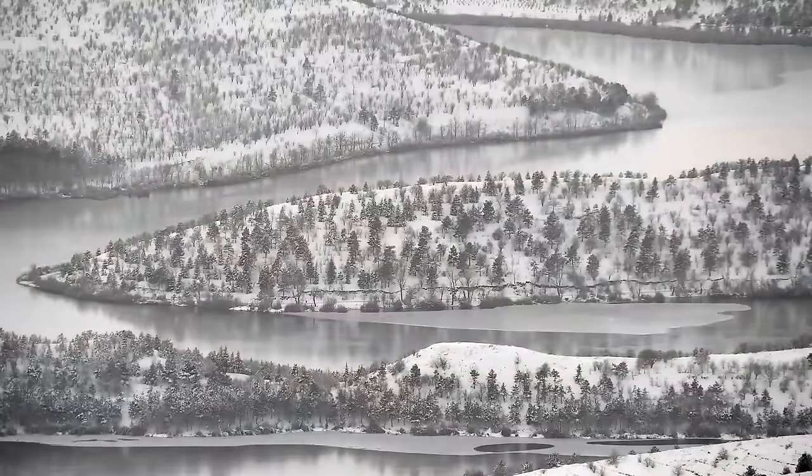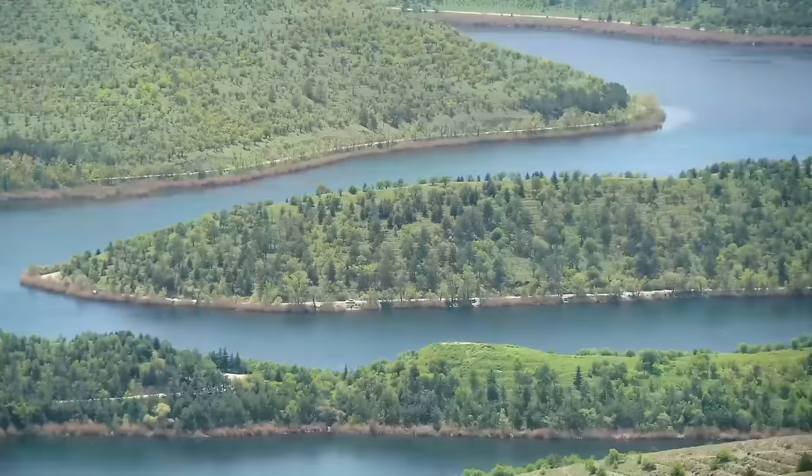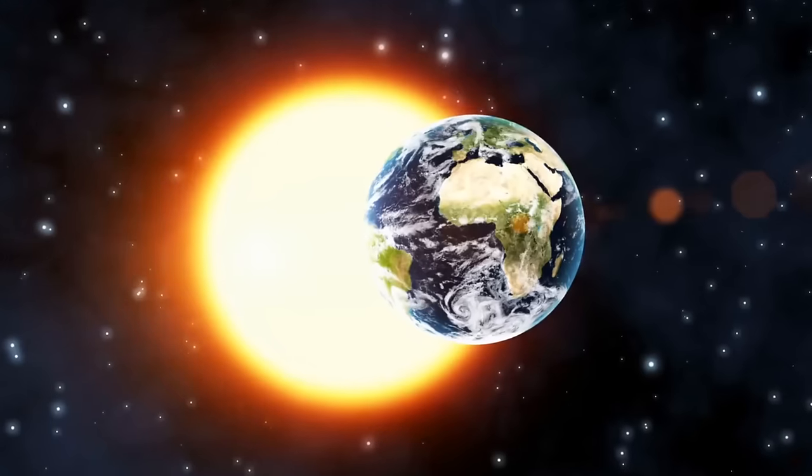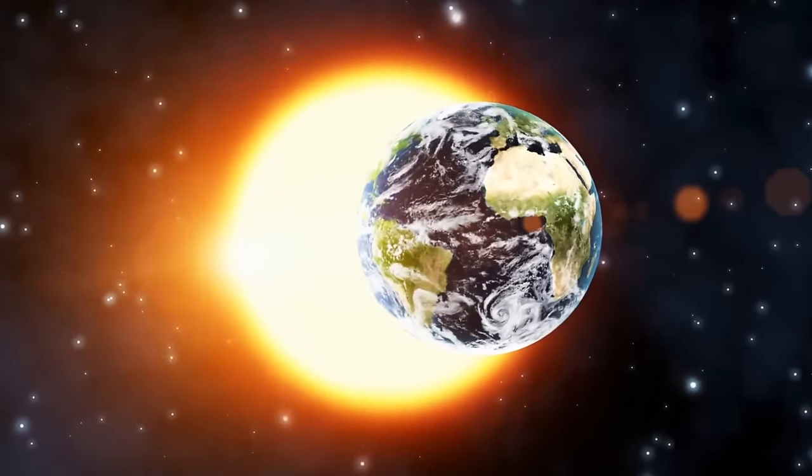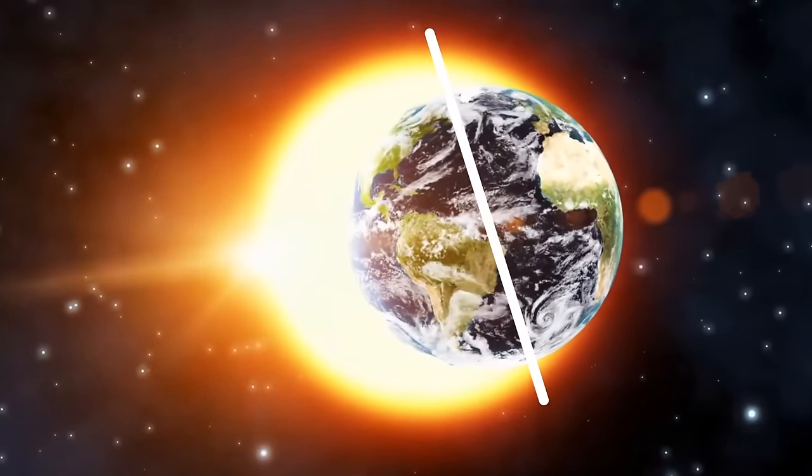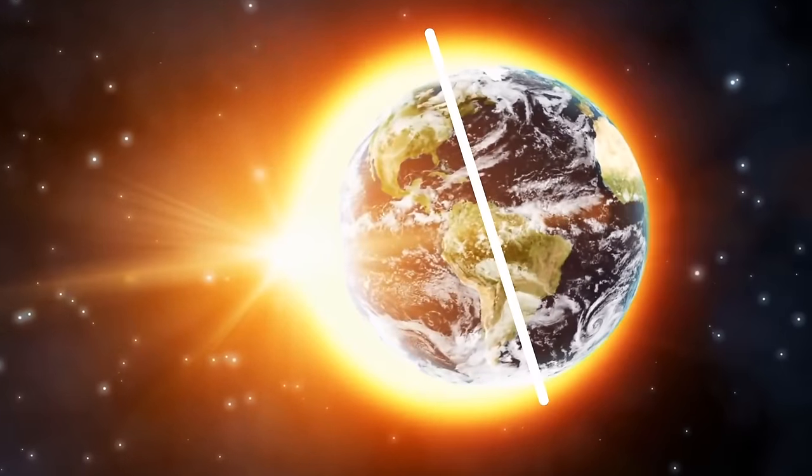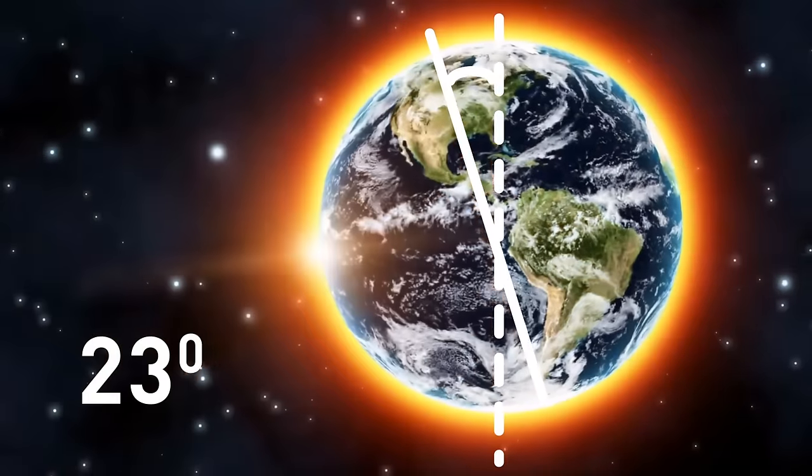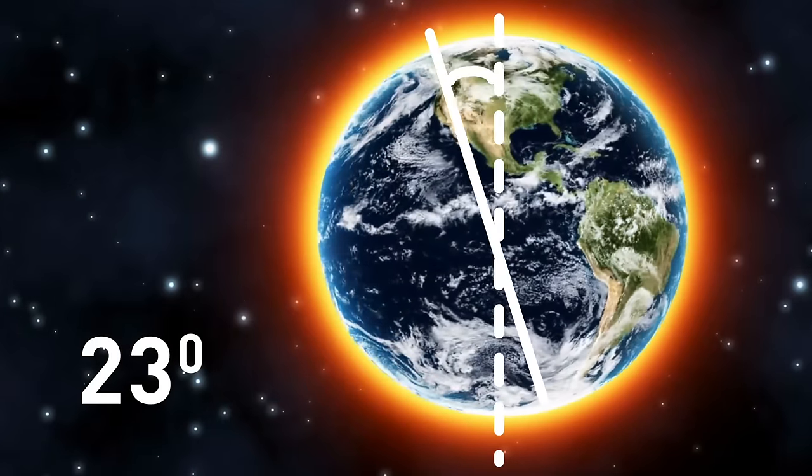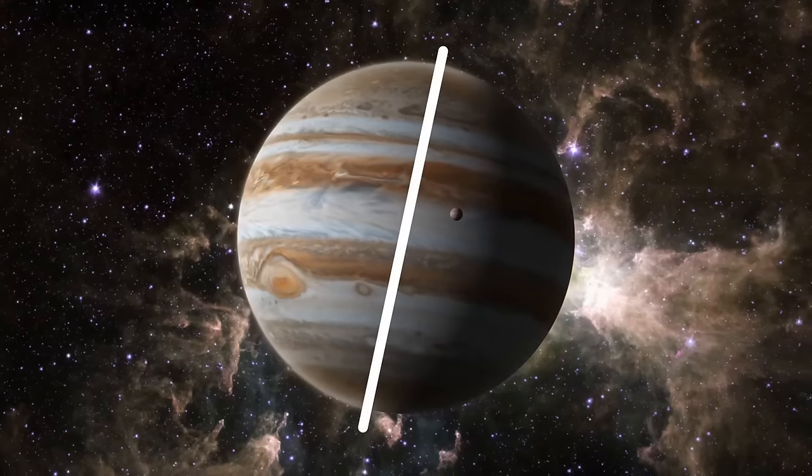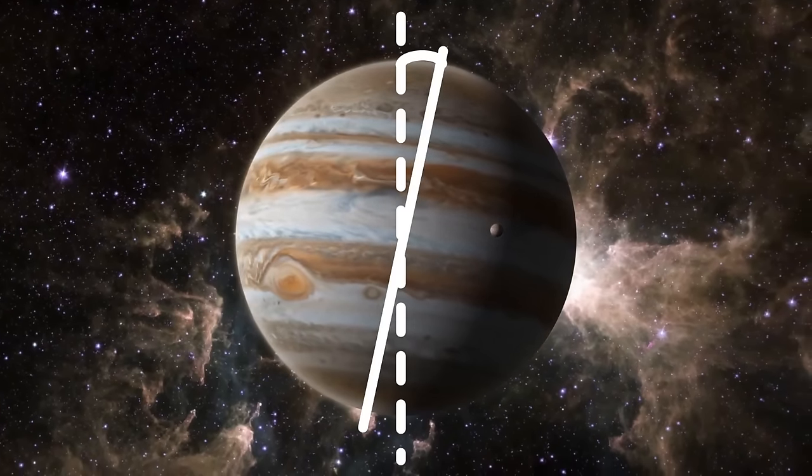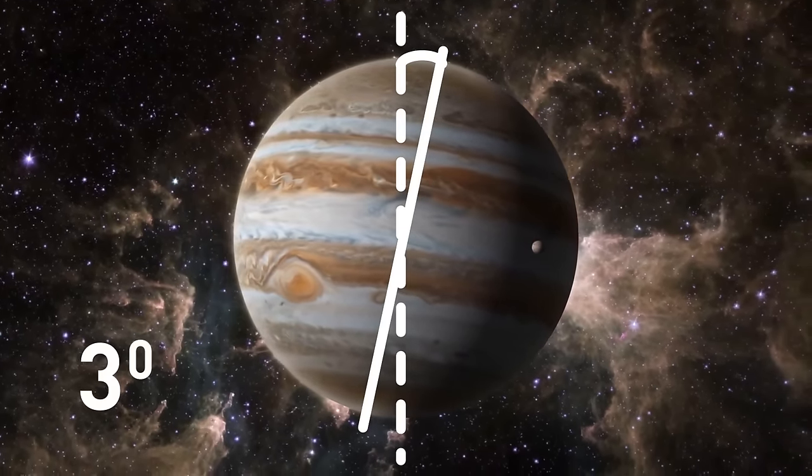On Earth, weather changes between winter, spring, summer, and fall because of the tilt of our planet's axis toward the plane in which it orbits the sun. This tilt, which is 23 degrees, allows different parts of the globe to receive different amounts of sunlight throughout the year. But Jupiter's axis is tilted toward its orbital plane by a mere 3 degrees.